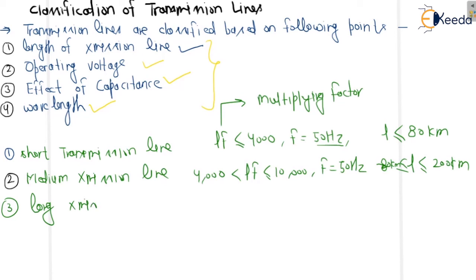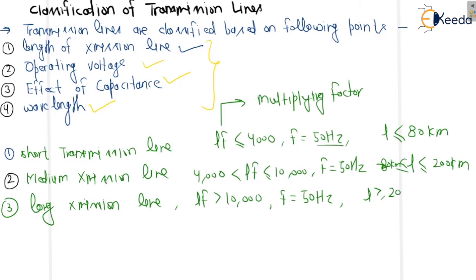The third type is the long transmission line. If the lf value is greater than 10,000, for f equal to 50 Hz, you will get L greater than or equal to 200 kilometers. So this is all about the classification of transmission lines. In the next lecture, we are going to deal with the short transmission line, medium transmission line, and long transmission line separately. Thank you.